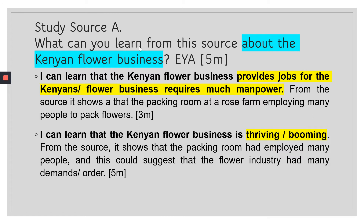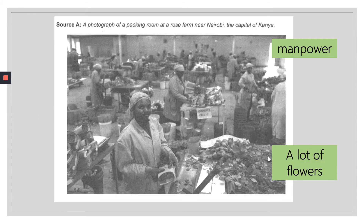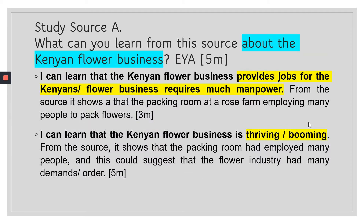The question asks what you can learn from Source A about the Kenyan flower business. Always use the question framing: 'I can learn that the Kenyan flower business provides jobs and requires much manpower,' or that it is a thriving and booming industry because many people are being employed, showing high demand for Kenyan flowers.